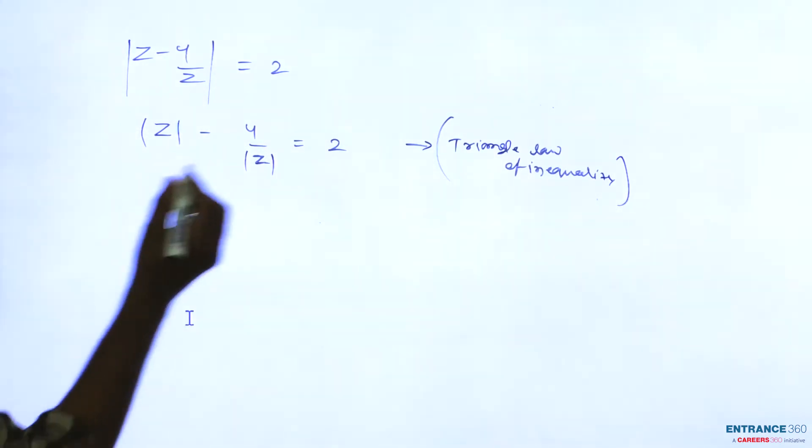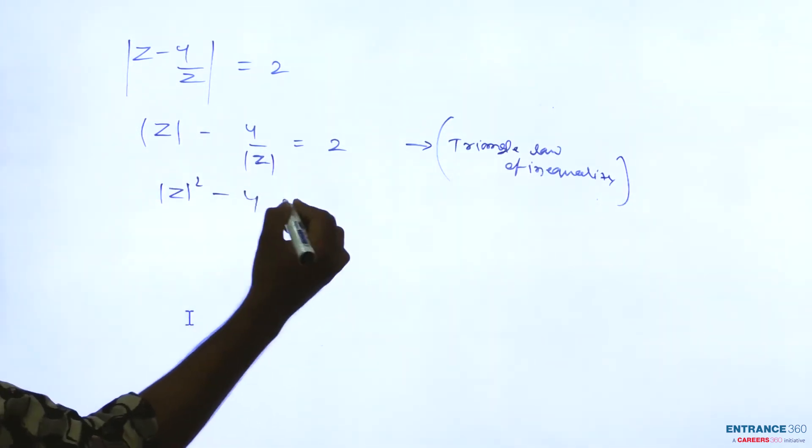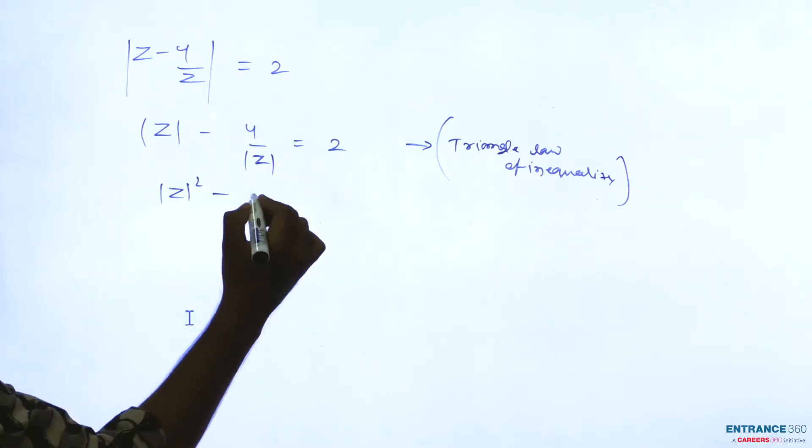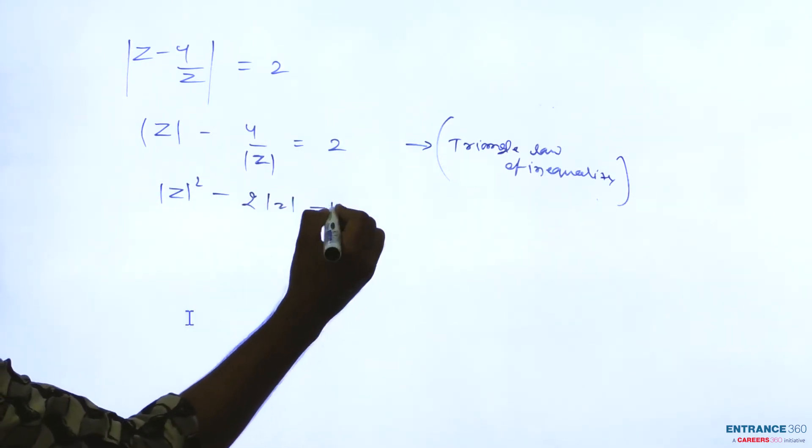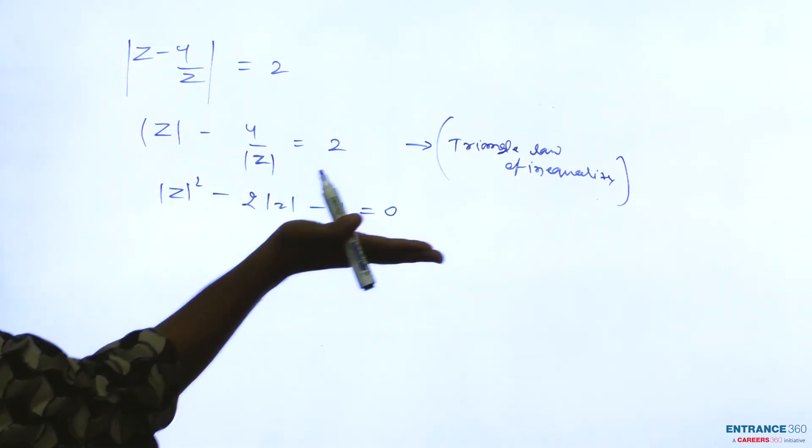Then you can form an equation like mod z squared minus 2 mod z minus 4 equal to 0. It is a form of quadratic equation.